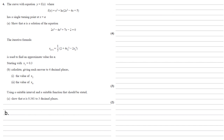The iterative formula x_{n+1} equals a seventh of (2 plus 4x_n squared minus 2x_n cubed) is used to find an approximate value for alpha. Starting with x₁ equals 0.3, we need to calculate x₂ and x₄ to four decimal places. To find x₂, we put x₁ into the iterative formula: a seventh of (2 plus 4 times 0.3 squared minus 2 times 0.3 cubed), which gives us 0.3294.